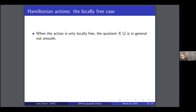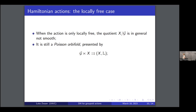If we go to the locally free case, things get a bit more complicated, because you cannot just consider the quotient and work there — the quotient is not smooth in general. It is still a Poisson orbifold, presented by the action groupoid.